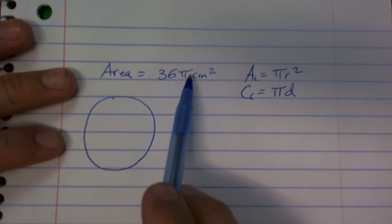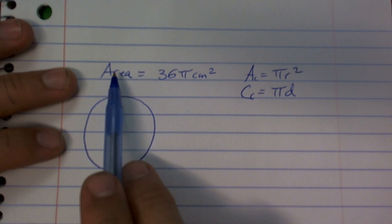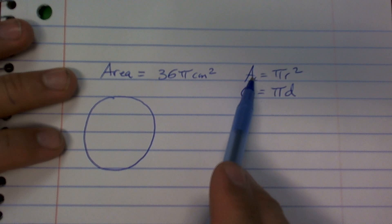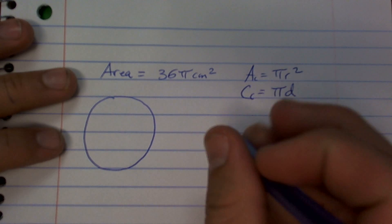Well, so for right now, if I look at this, they say the area equals 36 pi. So obviously I have to plug 36 in for area.